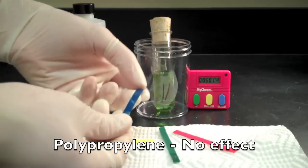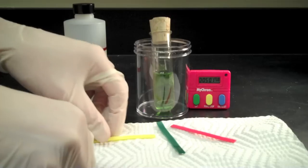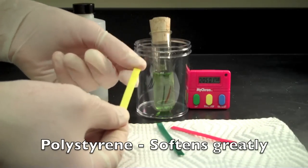The acetone had no effect on the blue strip of polypropylene. The yellow strip of polystyrene softened greatly and is now very sticky.